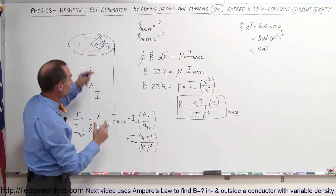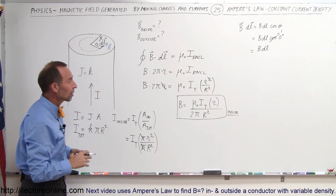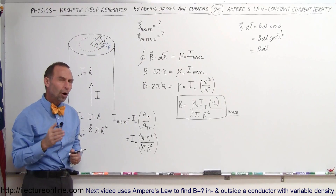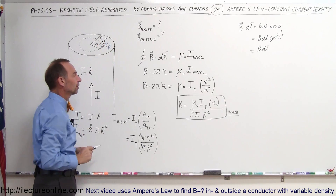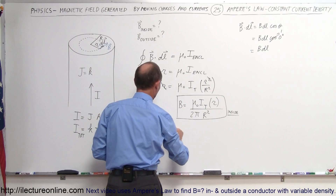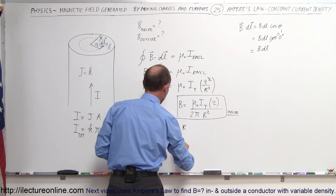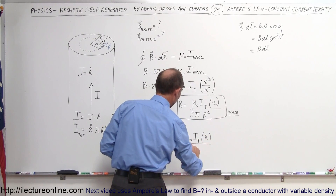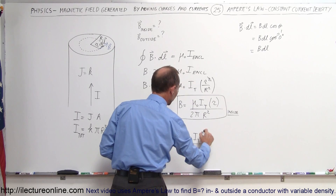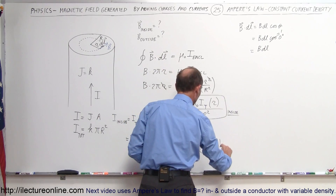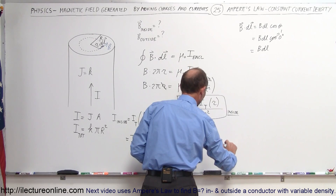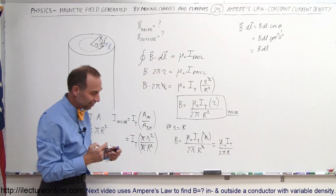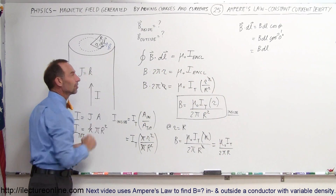As r gets bigger, there is more current enclosed and the magnetic field gets stronger. At the very center, the magnetic field is zero because r is zero. When r becomes equal to big R — at the very edge — we get B equals μ₀ I_total times R divided by 2π R squared. The R cancels, leaving μ₀ I_total divided by 2πR, which is exactly the equation for the magnetic field outside a conductor.